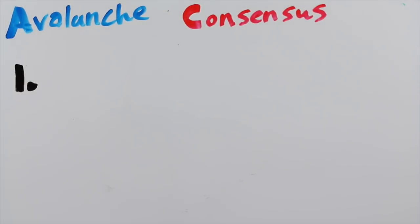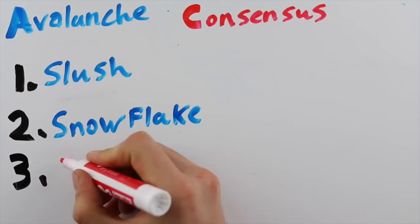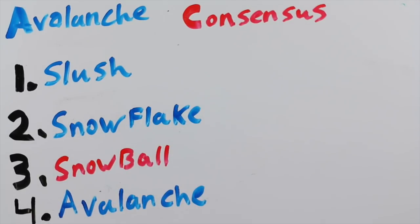Avalanche works in four stages: Slush, Snowflake, Snowball, and ends with Avalanche. First, let's take a look at Slush.